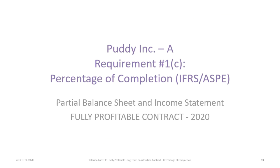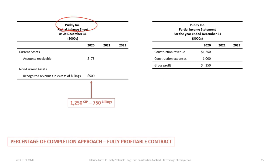As at December 31 (figures in thousands), we have a balance in Accounts Receivable of $75,000 — arrived at from the $750,000 billing debit minus $675,000 in collections. Then the net balance of Construction in Progress versus Billings: going back to the previous slide, Construction in Progress has a balance of $1,250,000.